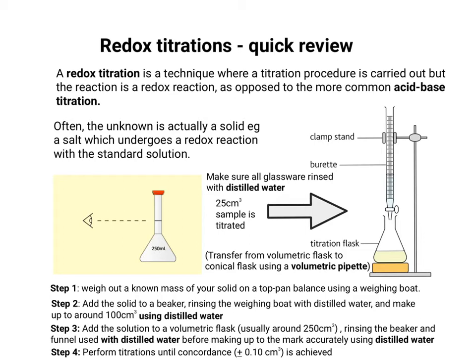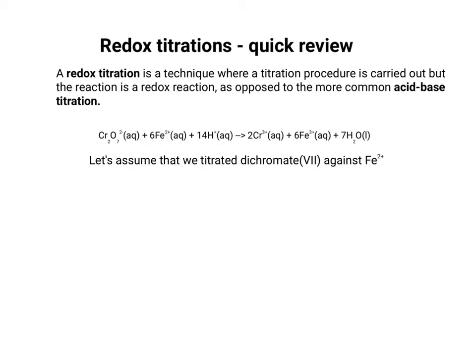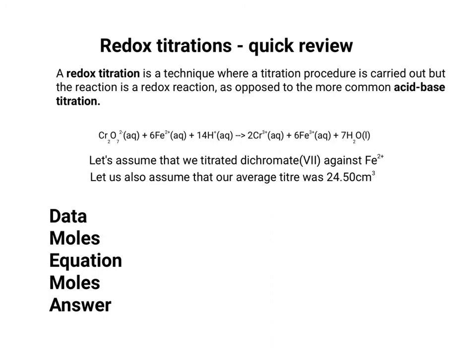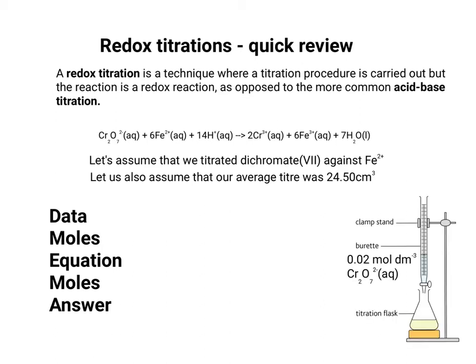Now let's look at how you would actually use the data obtained. Assuming we titrated dichromate-6 against iron 2+, we'll use a technique called data-moles-equation-moles-answer to make the calculation easier. With a dichromate concentration of 0.02 mol dm⁻³ — remembering that dichromate only acts as an oxidising agent when acidified — our average titre was 24.50 cm³.